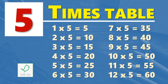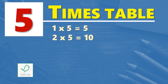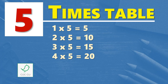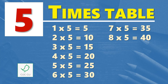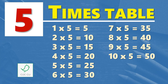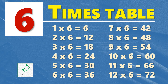Multiplication table of 5. 5 times table. 1 times 5 is 5, 2 times 5 is 10, 3 times 5 is 15, 4 times 5 is 20, 5 times 5 is 25, 6 times 5 is 30, 7 times 5 is 35, 8 times 5 is 40, 9 times 5 is 45, 10 times 5 is 50, 11 times 5 is 55, 12 times 5 is 60.